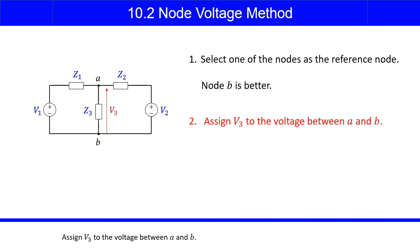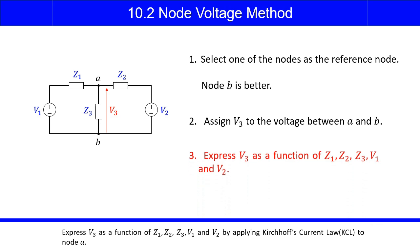Assign V3 to the voltage between A and B. Express V3 as a function of Z1, Z2, Z3, V1, and V2 by applying Kirchhoff's current law (KCL) to node A.